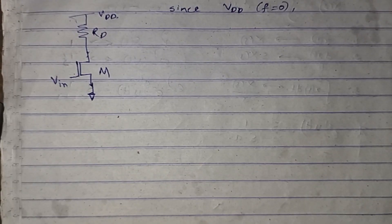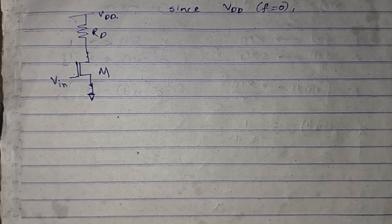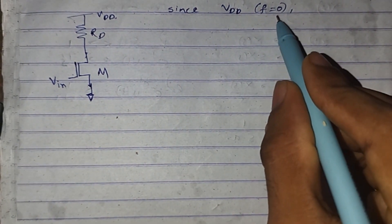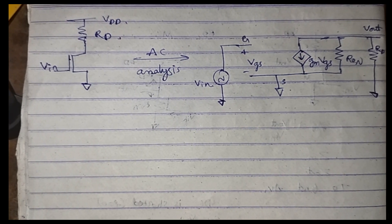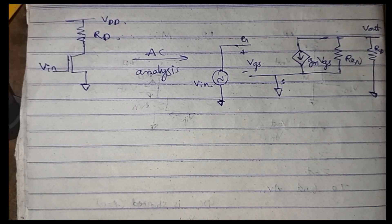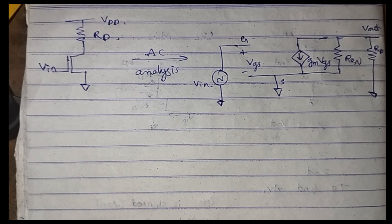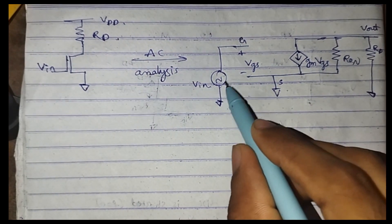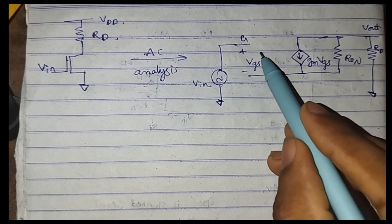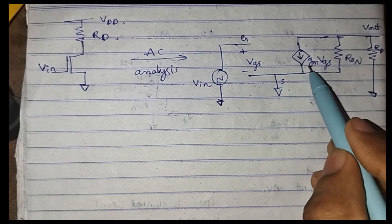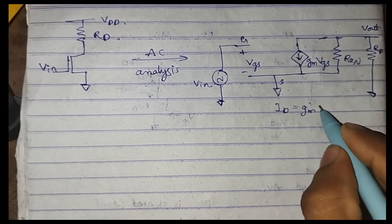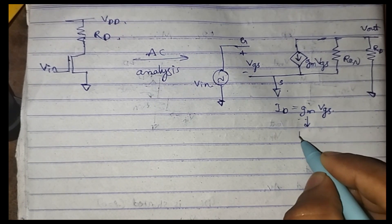To find the gain of the CS amplifier we have to apply small signal analysis. In small signal analysis, any DC sources are shorted because their frequency content is zero hertz. In AC analysis, the input is connected to the gate terminal, and the variation in gate-to-source voltage produces an equivalent drain current: ID equals gm times VGS, where gm is the transconductance.